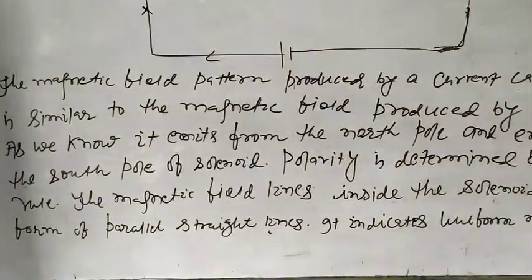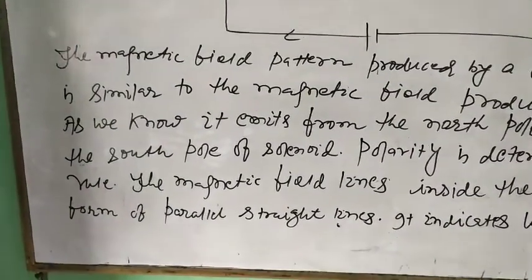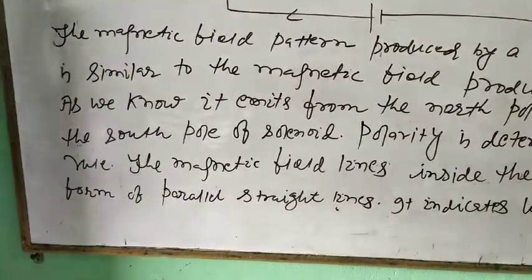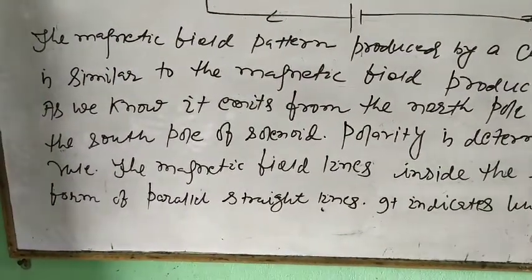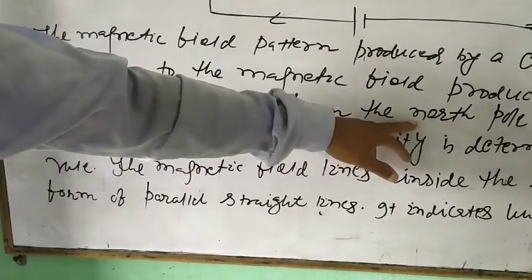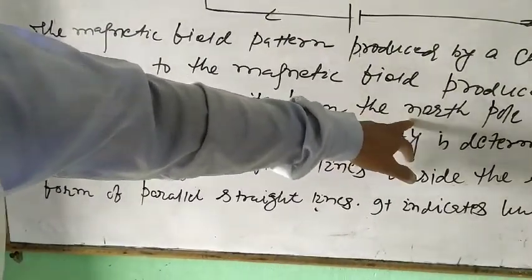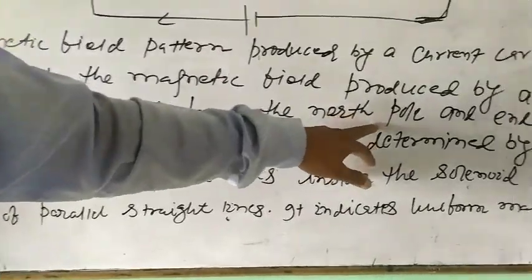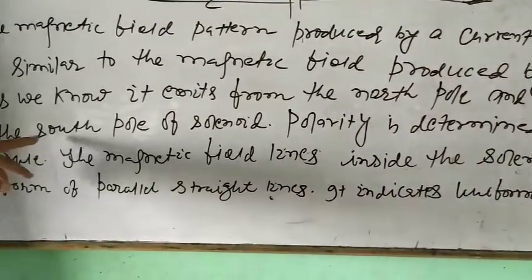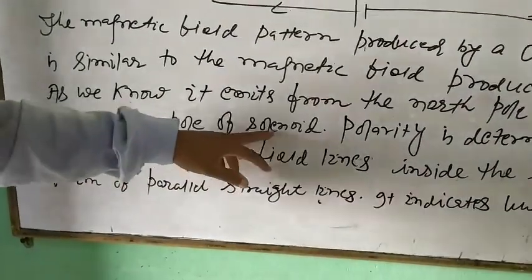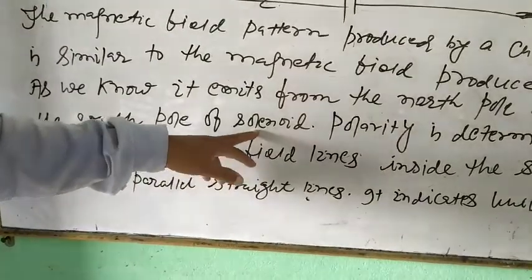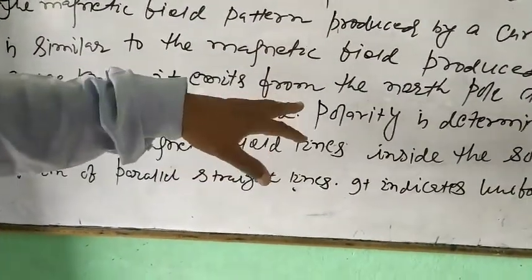As you know from the previous class, the magnetic field produced by a bar magnet emits from the north pole and enters at the south pole of the solenoid, just like a bar magnet.